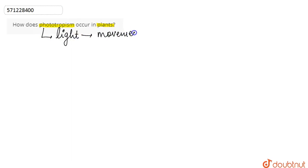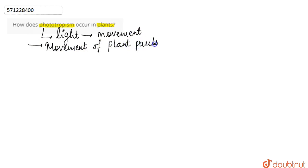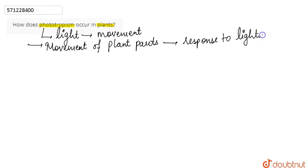So first, if we talk about phototropism — as the name suggests, 'photo' means light and 'tropism' means movement. So it is a process in which the movement of plant parts takes place in response to light. The stimulus here is light.